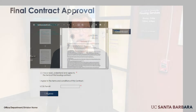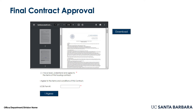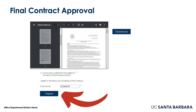You can download a copy of the contract with your digital signature and review it. After reviewing the contract, click the box to agree and enter your PERM number to finalize your agreement to the terms of your housing contract. After entering this information and clicking I agree, you're done.